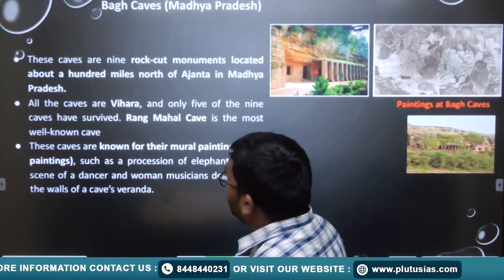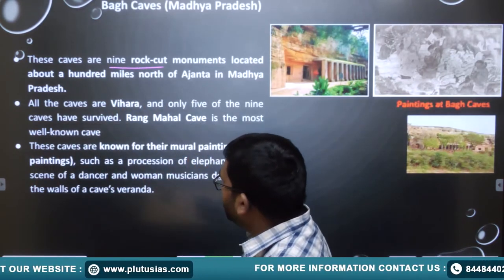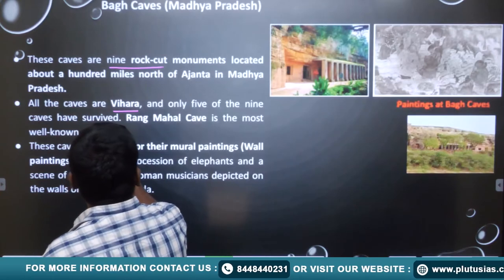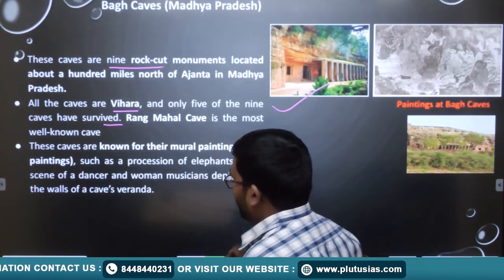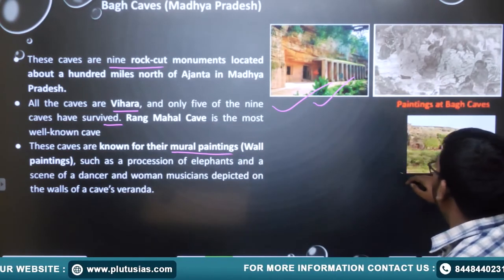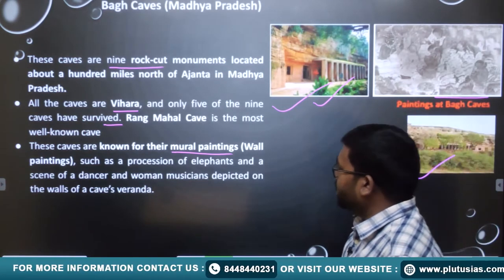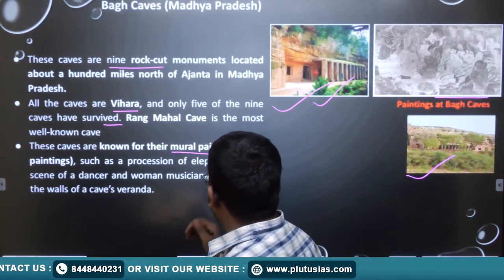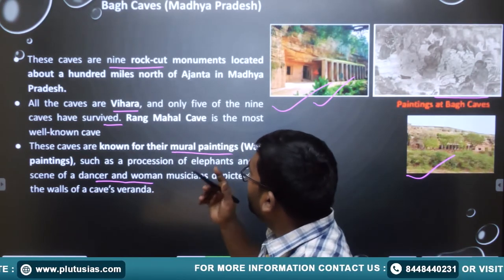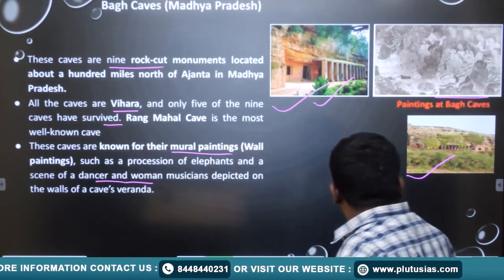Bagh caves in Madhya Pradesh are nine rock-cut monuments near Ajanta. All the caves are viharas and only five of the nine caves are surviving. These caves belong to Buddhism and are known for their mural paintings — depicting a procession of elephants, scenes of dancers and women musicians on the walls.